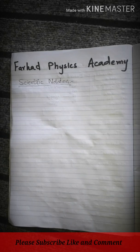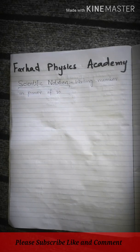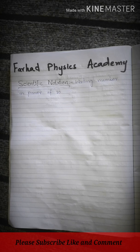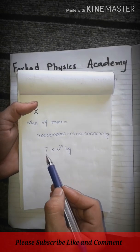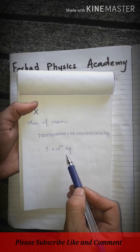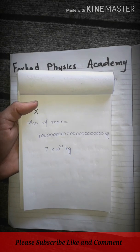First, let me write the scientific notation definition. How to define scientific notation: Writing numbers in power of 10. Meaning any large number, we can write as 10 power 2 or 3 or 4. Whatever number we have, we write it in short form. As I just showed you, the mass of the moon was a very large number. In scientific notation, we brought it down to a smaller number. This method is called scientific notation.